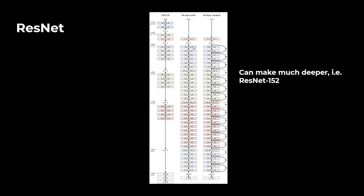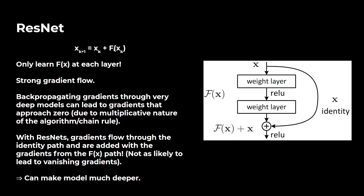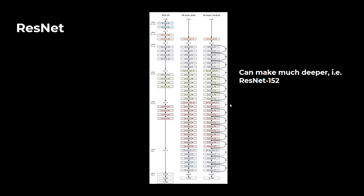Another intuition for why ResNets work: if your feature map halfway through the network is already close to optimal, other methods must reconstruct the optimal mapping at every subsequent layer. With ResNet, f only needs to learn the zero mapping — which is much easier than learning the full identity mapping from scratch. This has been observed empirically and is part of why ResNets work so well.